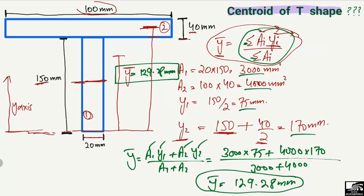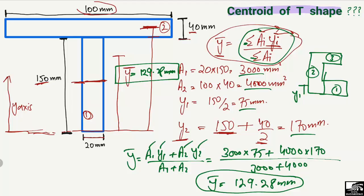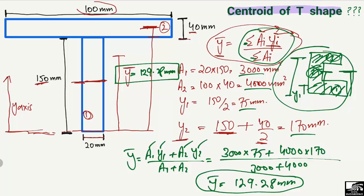You can also find the centroid for a complex shape. For example, if you have a shape with three parts, simply find the centroid of each object — y1, y2, and y3 — and also find the area of each part: A1, A2, and A3. Then apply the same formula to find the overall centroid of the composite object.